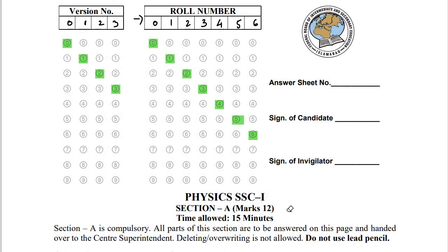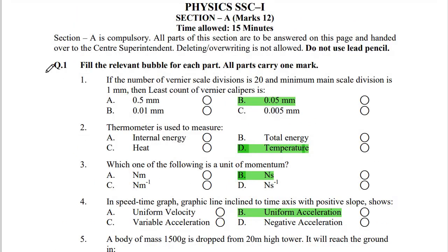Look at the specifications: this section consists of 12 MCQs, maximum marks 12, and time allowed is 15 minutes. This is Section A — compulsory — all parts of this section are to be answered on this page and handed over to the center superintendent. Deleting and overwriting is not allowed; do not use a lead pencil. These are the conditions you need to keep in mind.